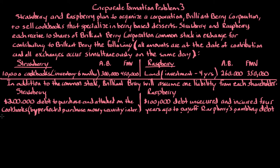Please stop the video and look at those problems before you do this one. In this problem, we have two individuals, Strawberry and Raspberry. They plan to organize and form a corporation, which we'll call Brilliant Berry Corporation. The corporation sells cookbooks that specialize in berry-based desserts — things like Strawberry Shortcake, Blueberry Crumble, and all different types of berry desserts. Strawberry and Raspberry each receive 10 shares of Brilliant Berry common stock in exchange for contributing the following assets.